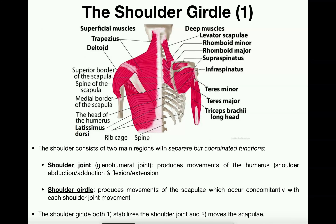Before we go into the actual shoulder joint and shoulder girdle, we need to understand something very unique about the shoulder in the human body. Each part of the upper body generally has a lower body counterpart. For example, the triceps in the upper body perform basically the same function as the quadriceps in the lower body — one extends the elbow, the other extends the knee.